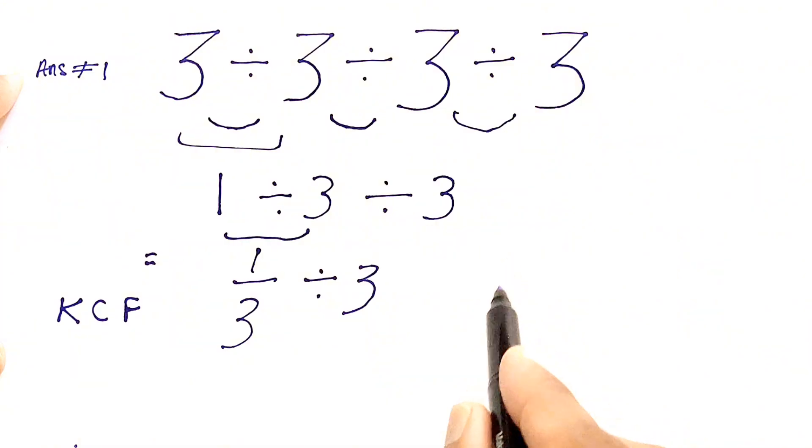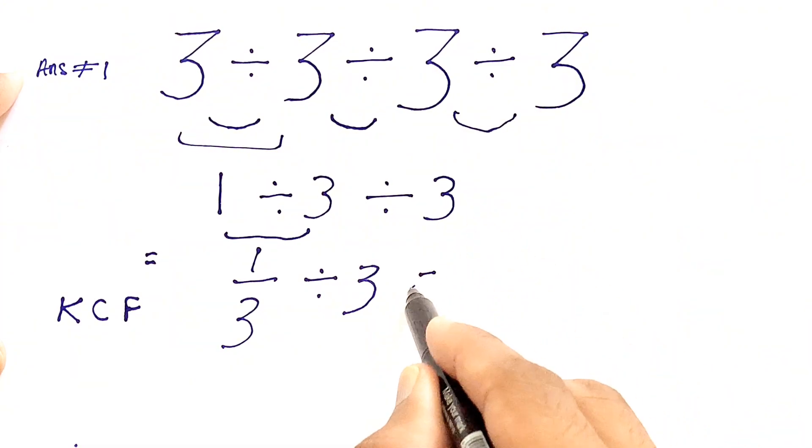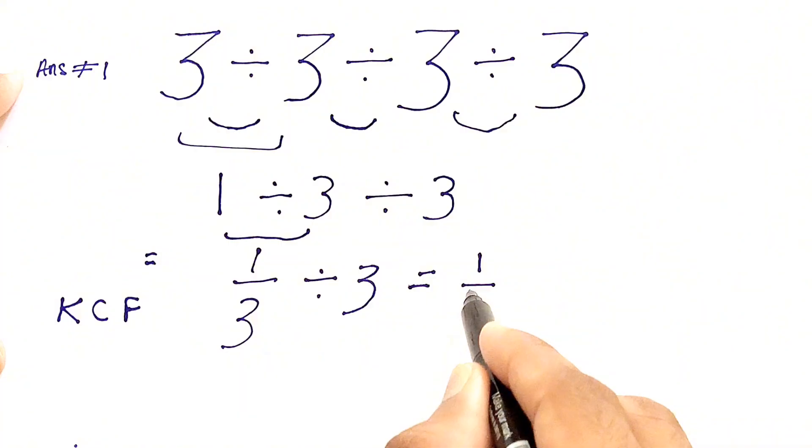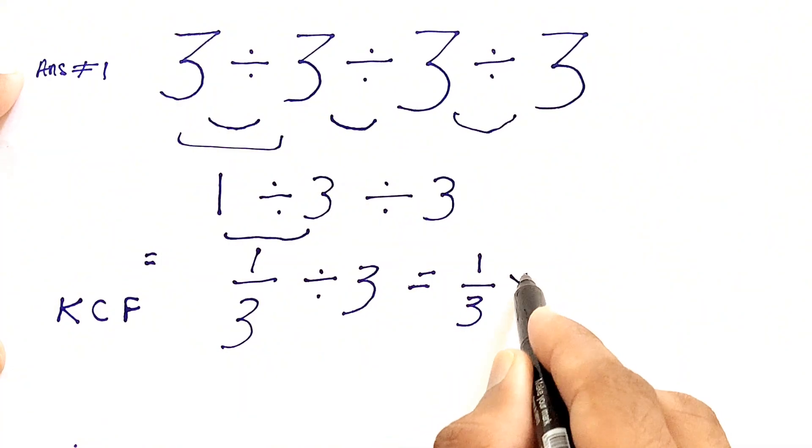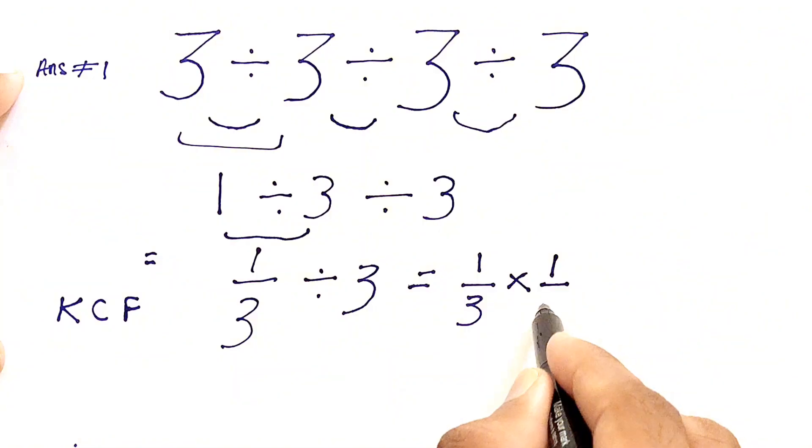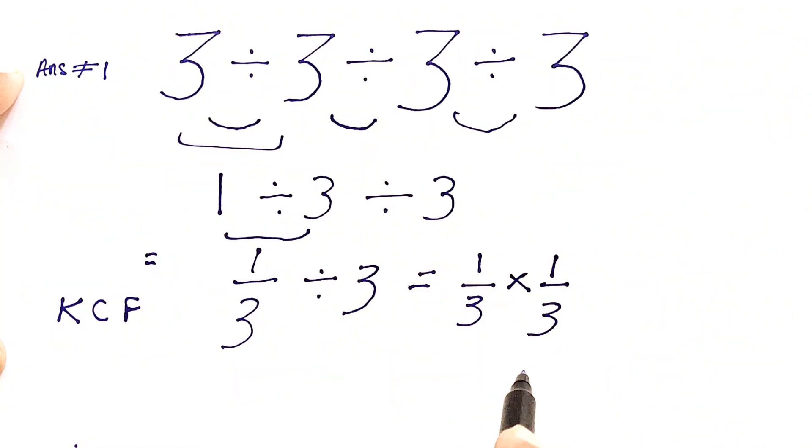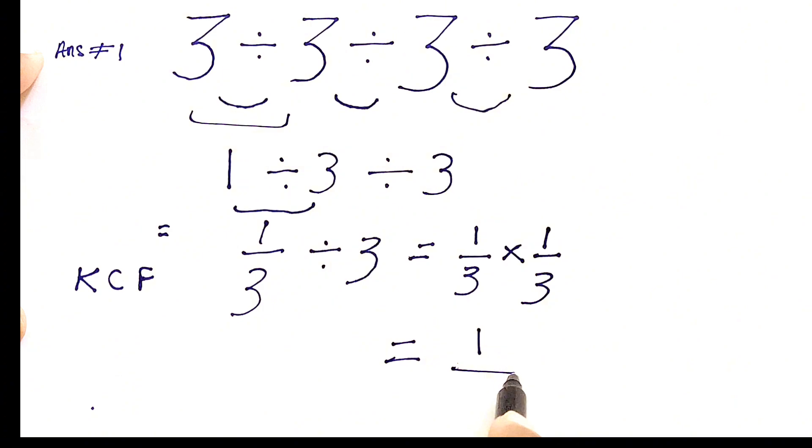So we'll write 1 by 3 as it is, and now instead of doing division we need to do multiplication by taking the reciprocal of 3, that is 1 by 3. Now here we can solve this easily, and the answer to 1 by 3 times 1 by 3 gives us 1 by 9.